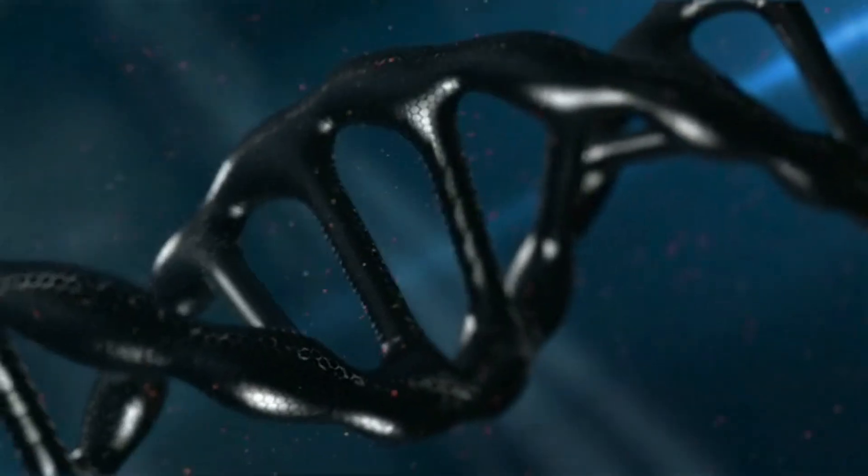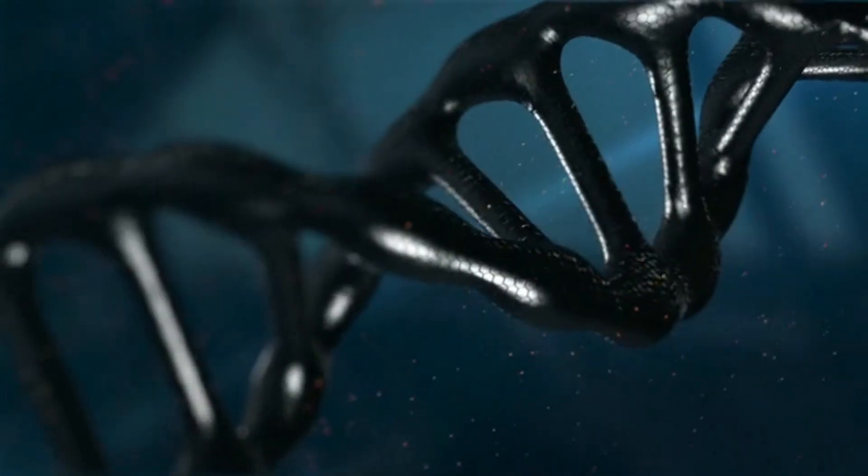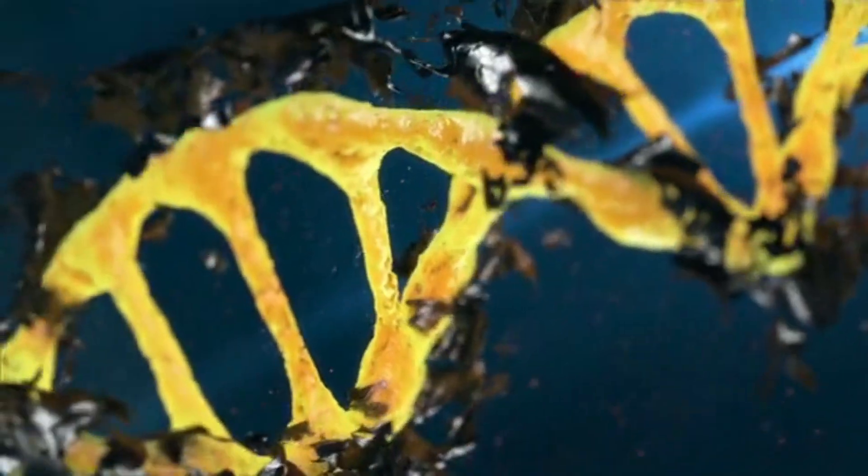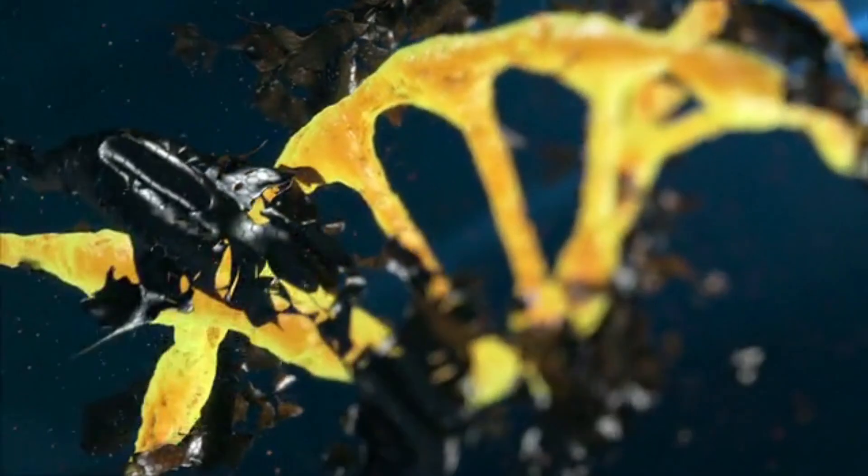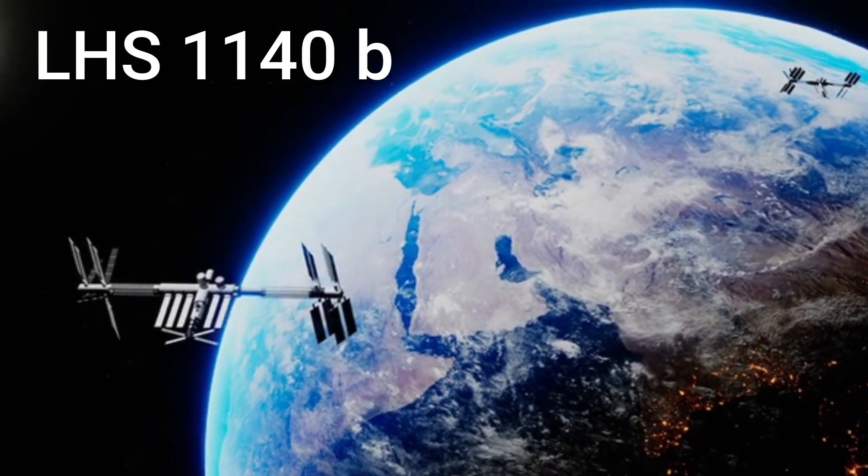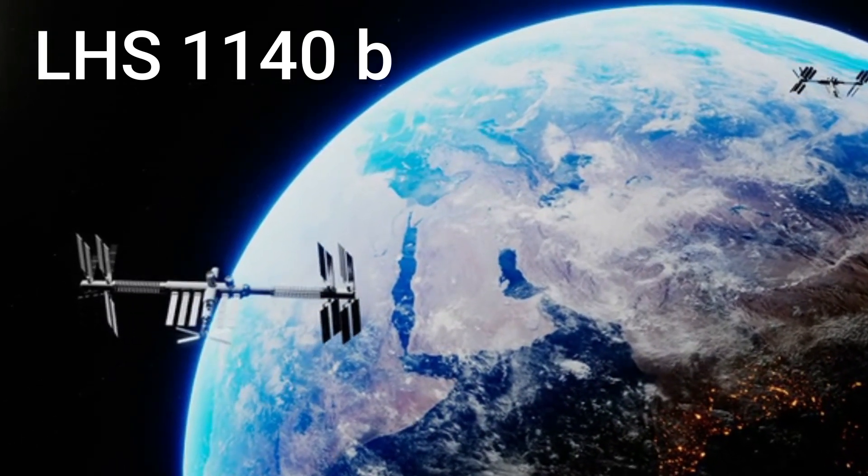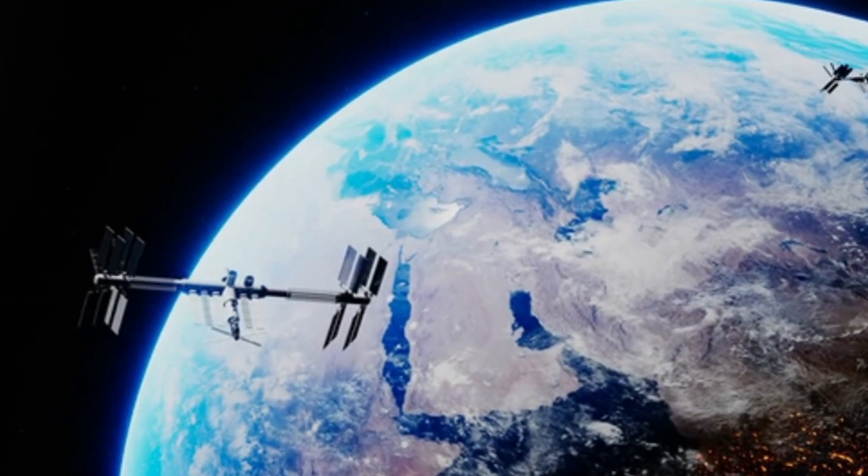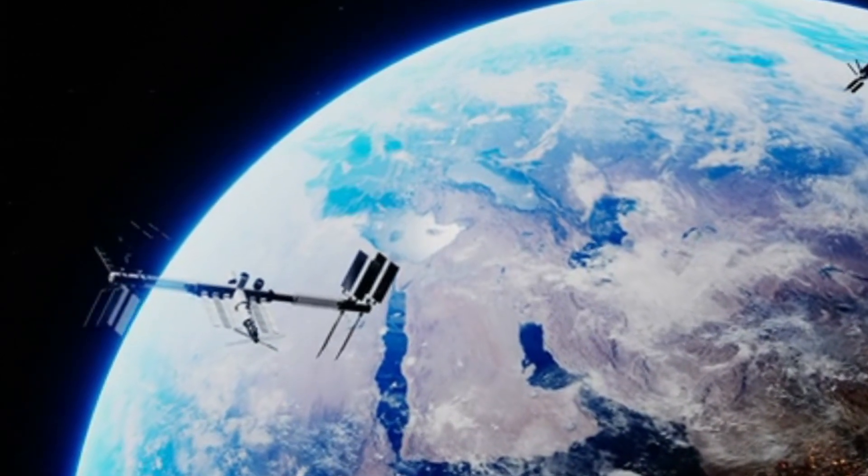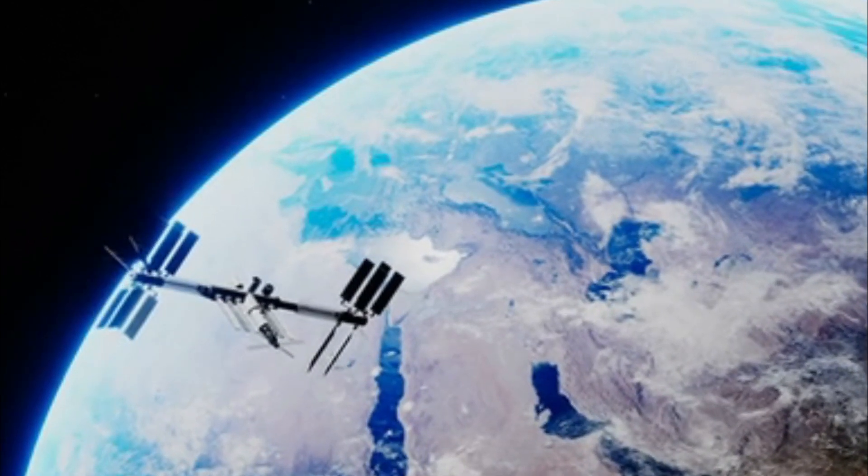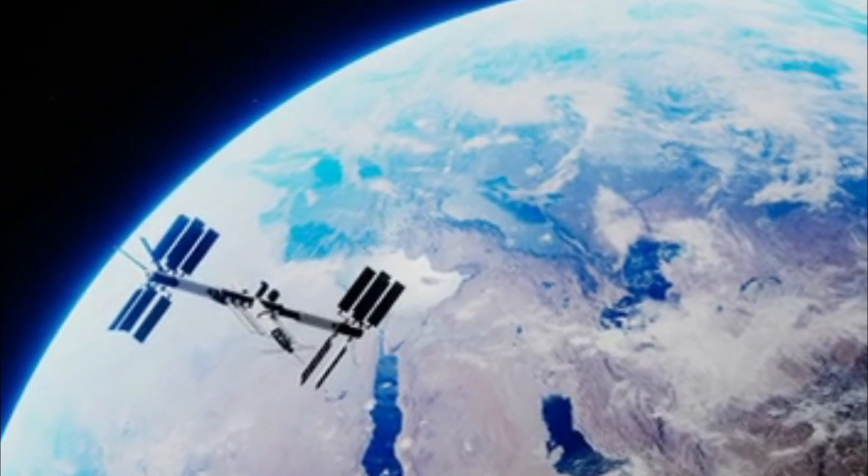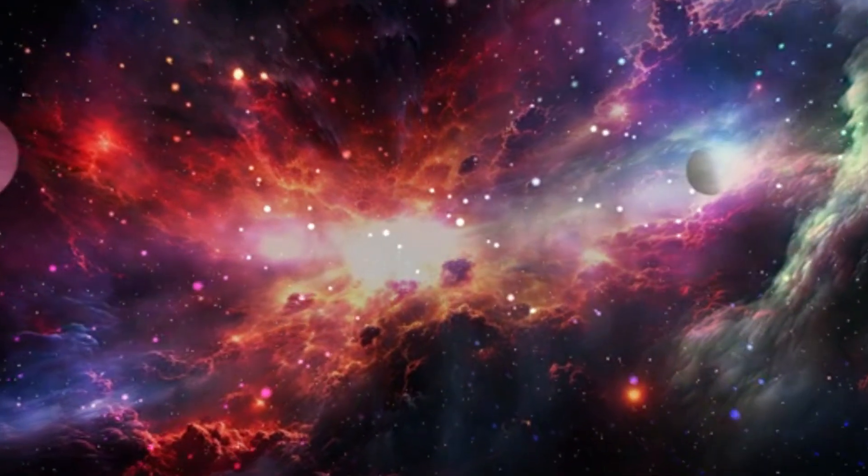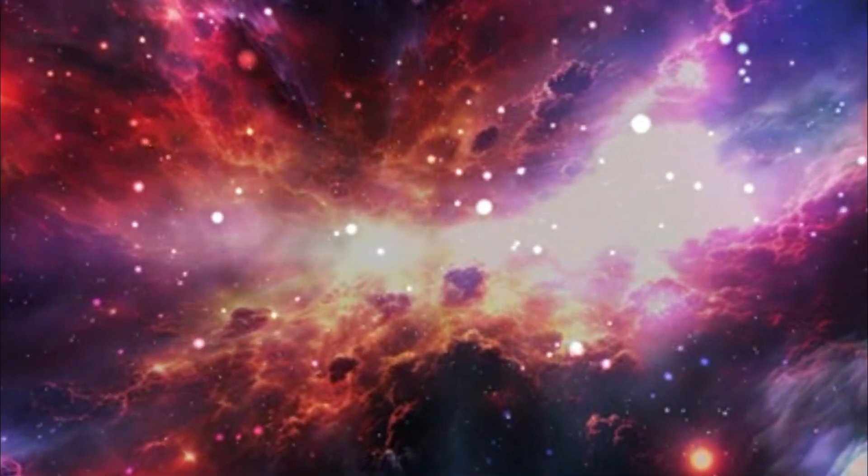The question of biological contamination is particularly pertinent when considering the potential for life on any of these exoplanets. For instance, the recent discovery of the Earth-like exoplanet LHS-1140b, located about 40 light-years away in the constellation of the Phoenix, raises concerns about cross-contamination. As we plan future missions to explore such exoplanets, there is a risk of inadvertently introducing Earth-based microorganisms to these distant worlds. This could pose significant risks to any potential native ecosystems and complicate efforts to accurately detect native life forms.